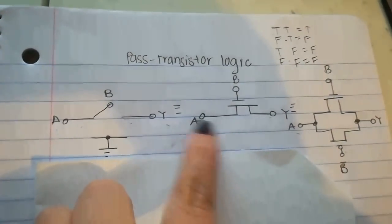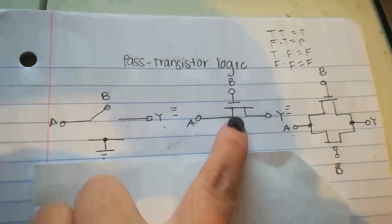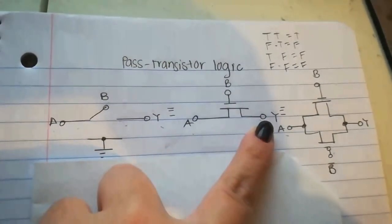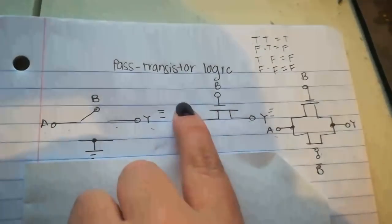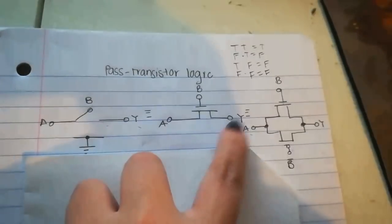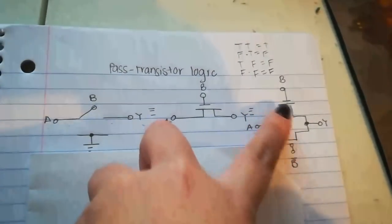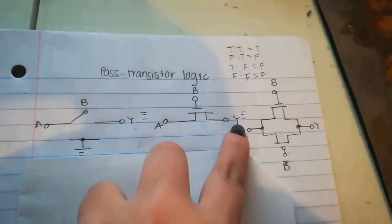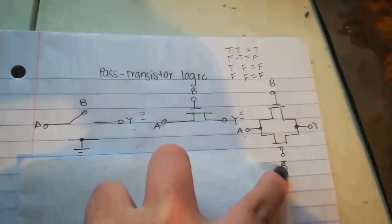And so that translates into this, which is an NMOS transistor. So A and B equals Y. And now that transfers into this: A and B equals Y plus A and B̄.